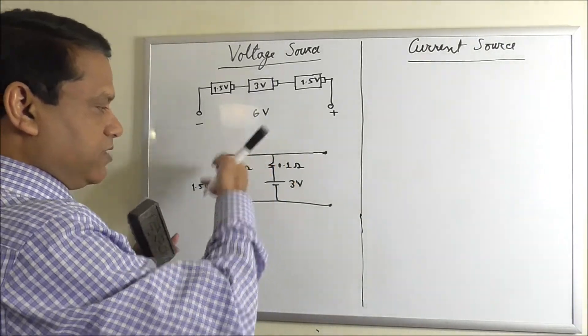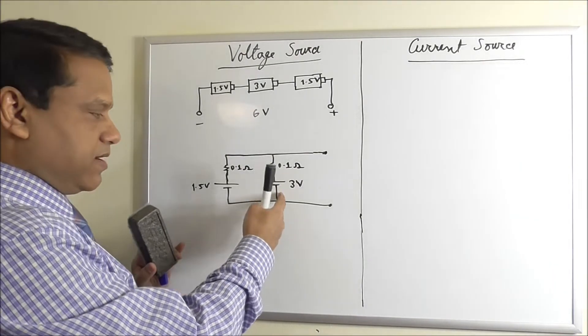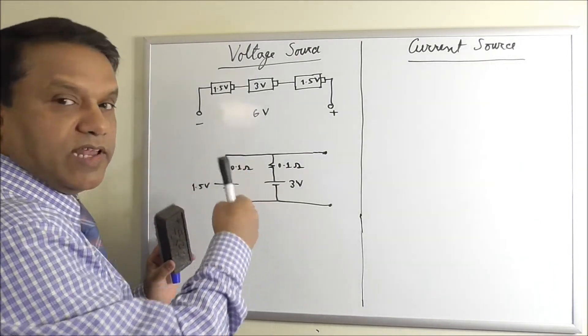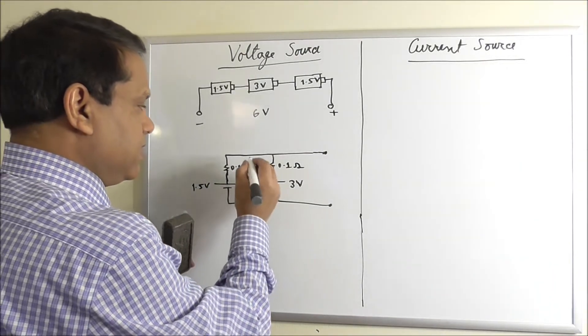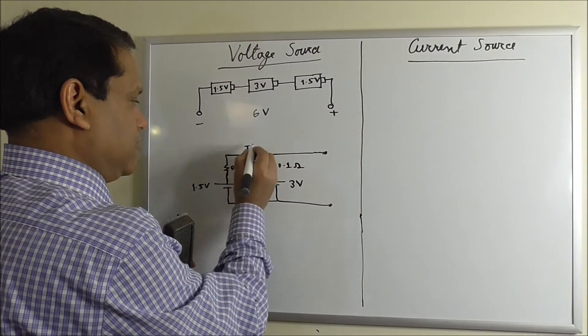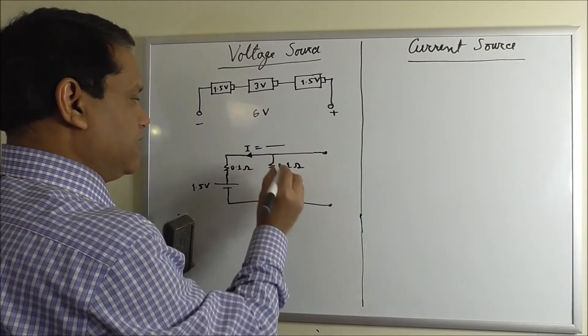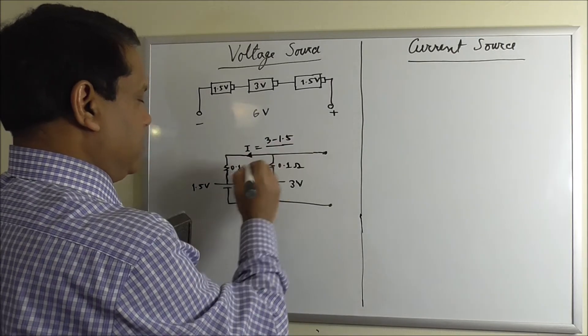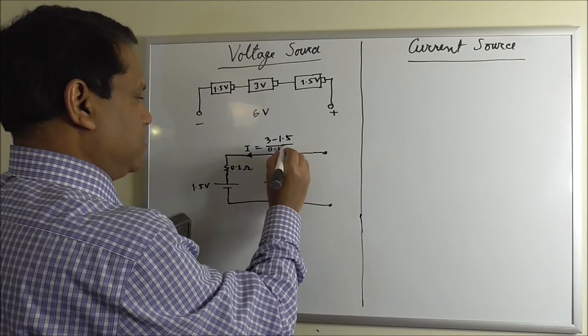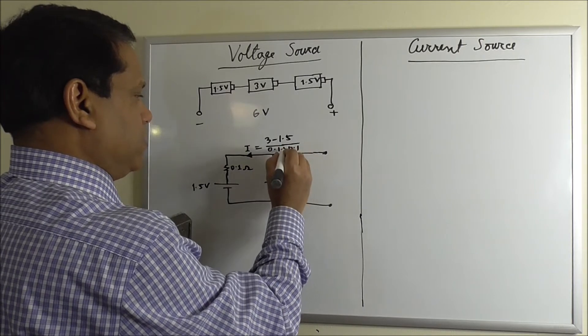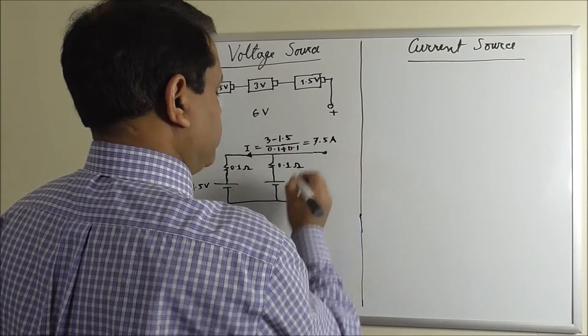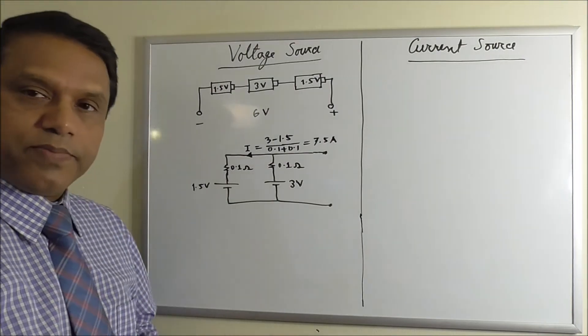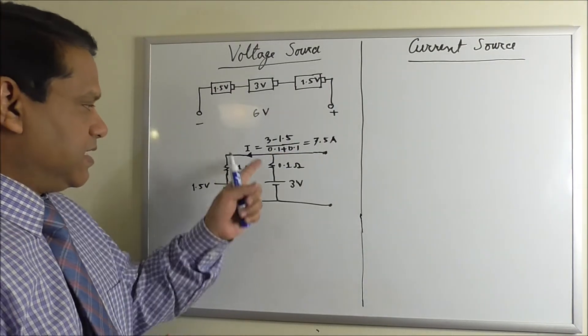There will be current flowing this way because this battery voltage is bigger than this one. If you apply KVL you will find the current. The current will be, so this is the current I, I will be 3 minus 1.5 over 0.1 plus 0.1. You have 7.5 ampere which is a very big current.